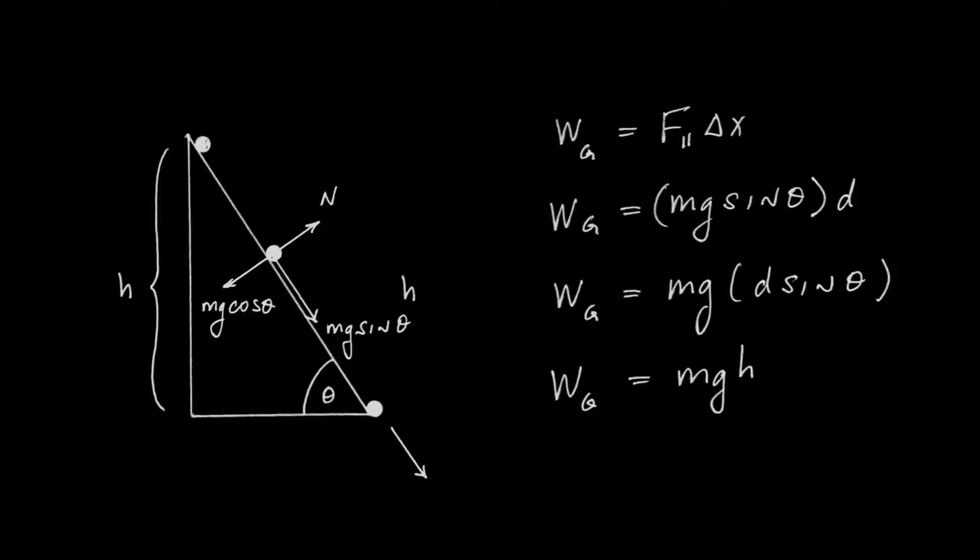Rearranging, the work done by gravity is mg times d sin theta. Looking at the diagram, if d is the hypotenuse and theta is the angle, then d sin theta equals h. So I discover that the work done by gravity in this case is also mgh — the same as in the freefall case. The motions are very different, different forces are doing the work, and yet the work done by gravity is the same. Except it's not a coincidence.